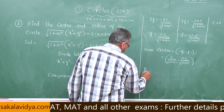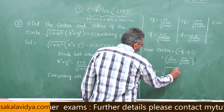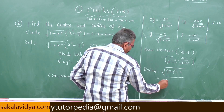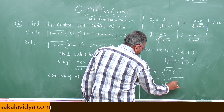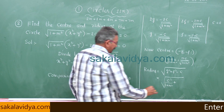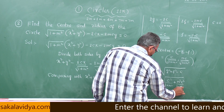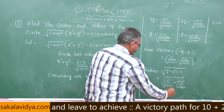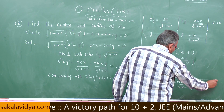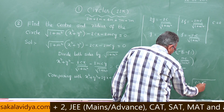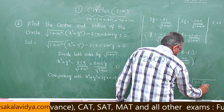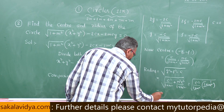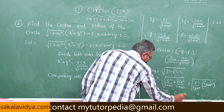Now for the radius: radius = √(g² + f² − c). So radius = √(C²/(1+m²) + m²C²/(1+m²)). Taking C²/(1+m²) as common, we get √(C²/(1+m²) · (1 + m²)), and the (1+m²) terms cancel. We have √(C²) = C. So the radius is C units.